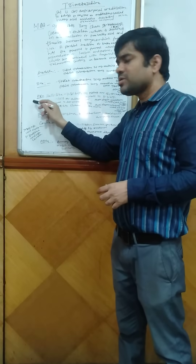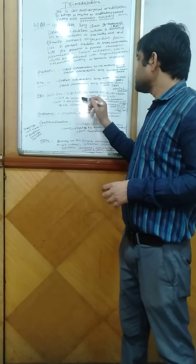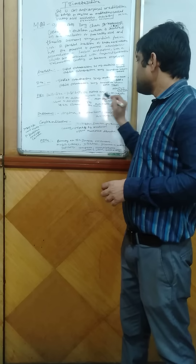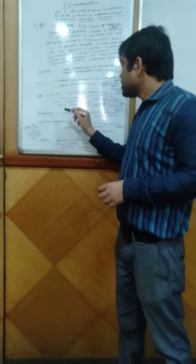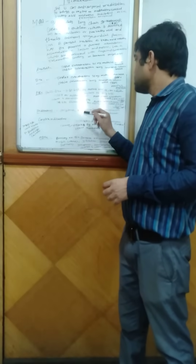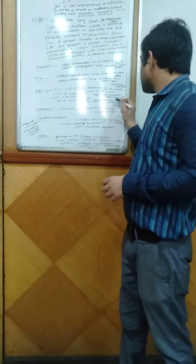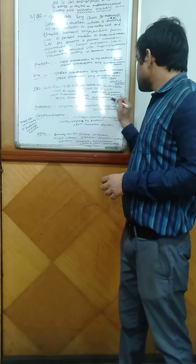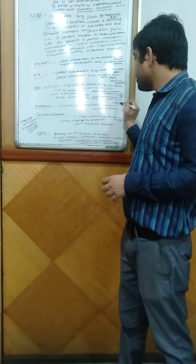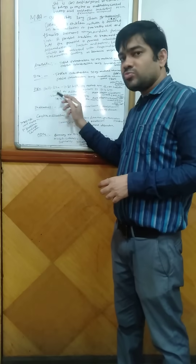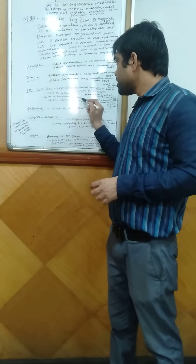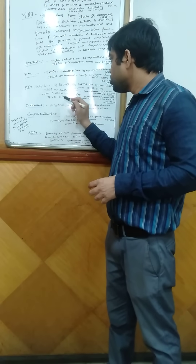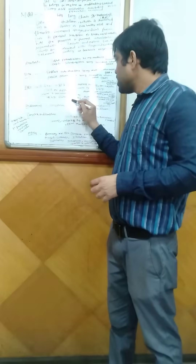Coming to the pharmacokinetics, the half-life is 7.81 hours. In patients over 65 years, the half-life increases to 11.7 hours. The onset of action is 1 hour, and peak plasma concentration is reached in less than 2 hours in case of the immediate release tablet. The volume of distribution is 4.8 L per kg, and 79–84% of the drug is eliminated in the urine.